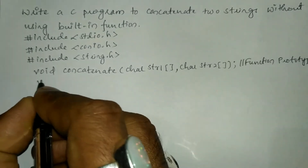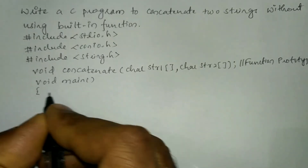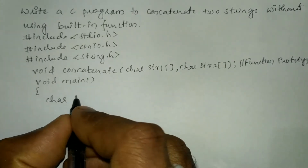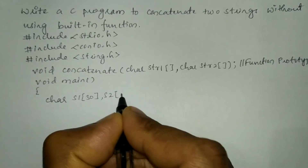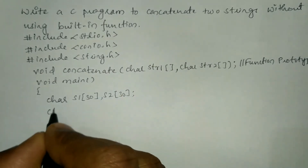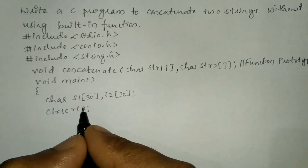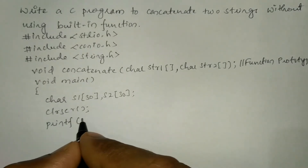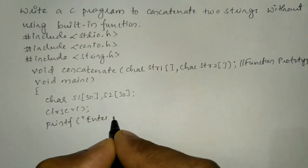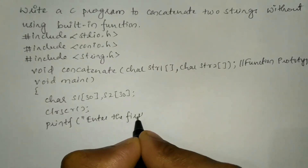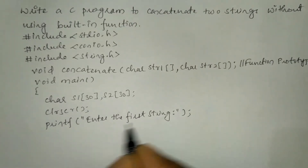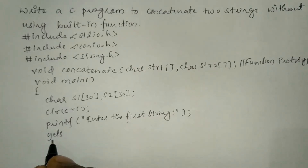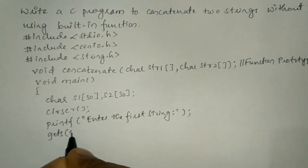Now let us write the void main function with a curly open brace. Here we are going to declare two strings: char s1 of size 30 and s2 of size 30. We call clrscr to clear the screen. Now we will ask the user to enter the first string using a printf statement — 'enter the first string' — and receive the input from the user through the keyboard using gets(s1).